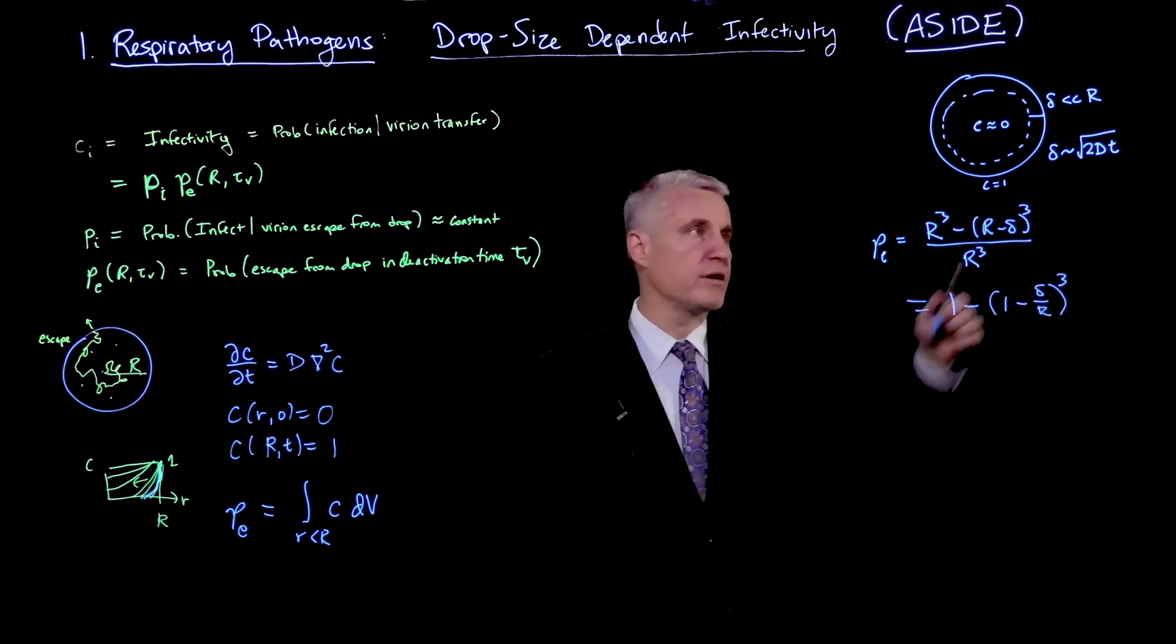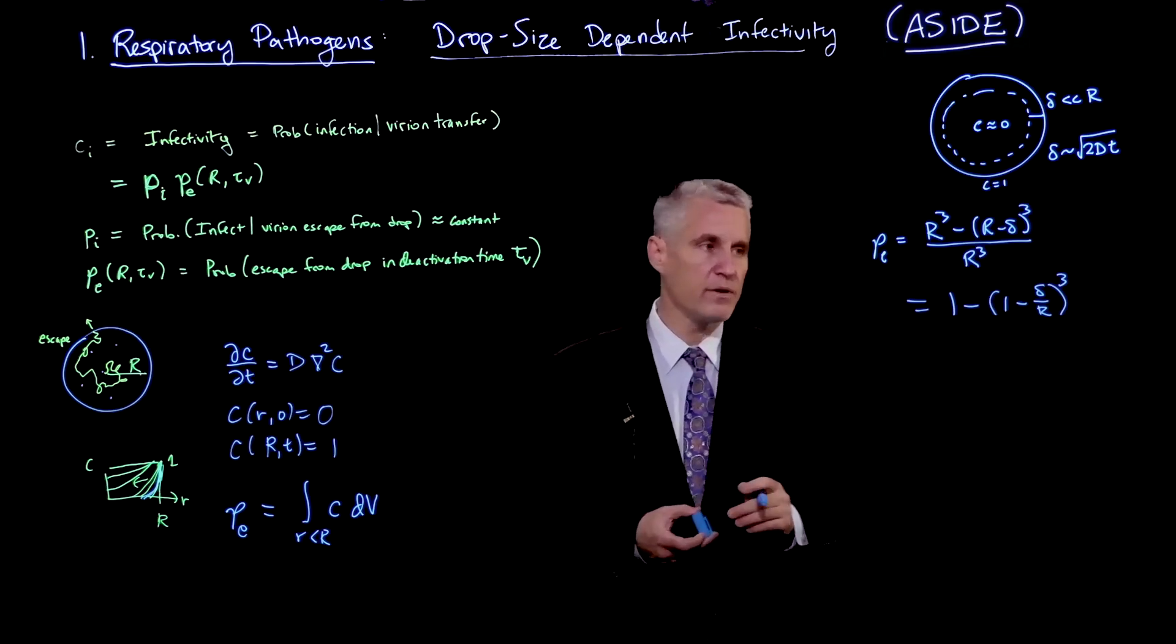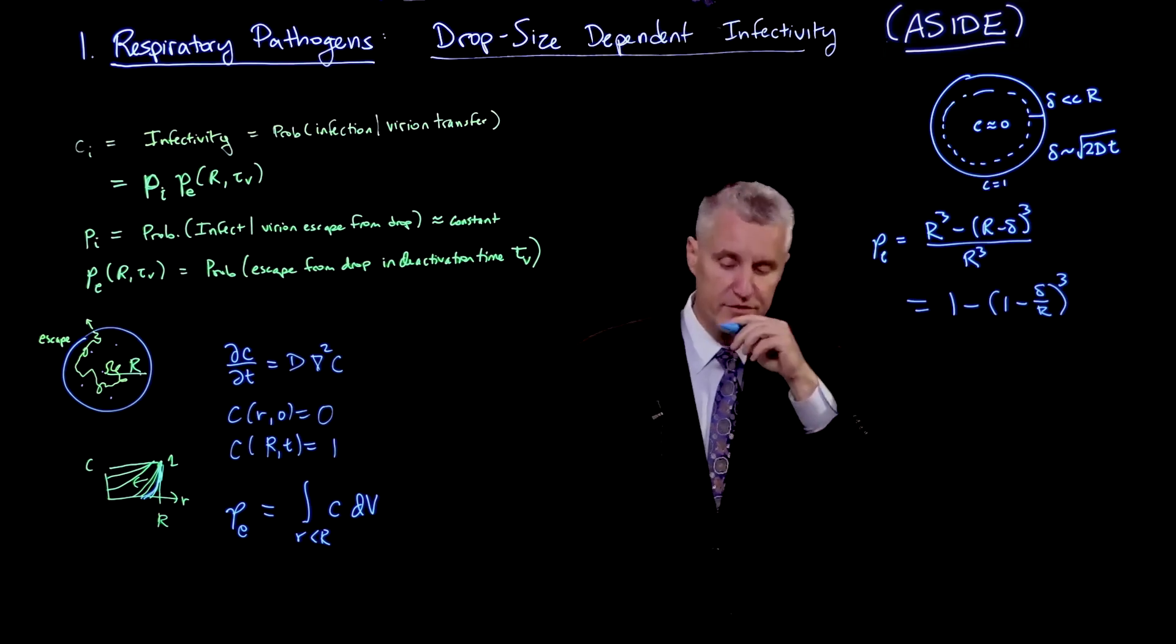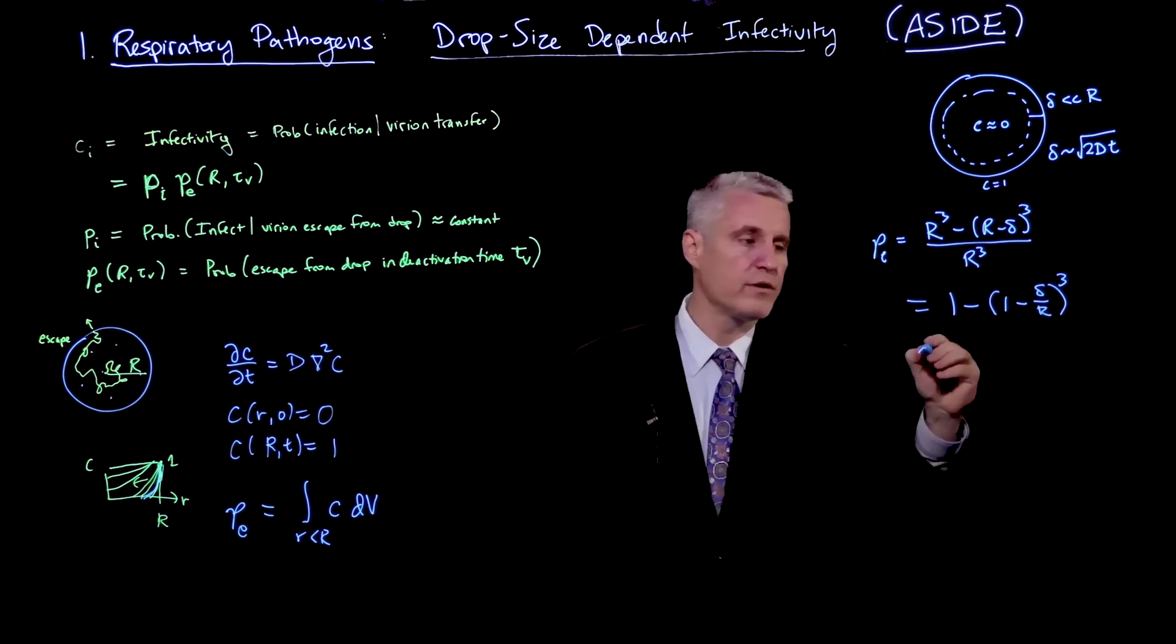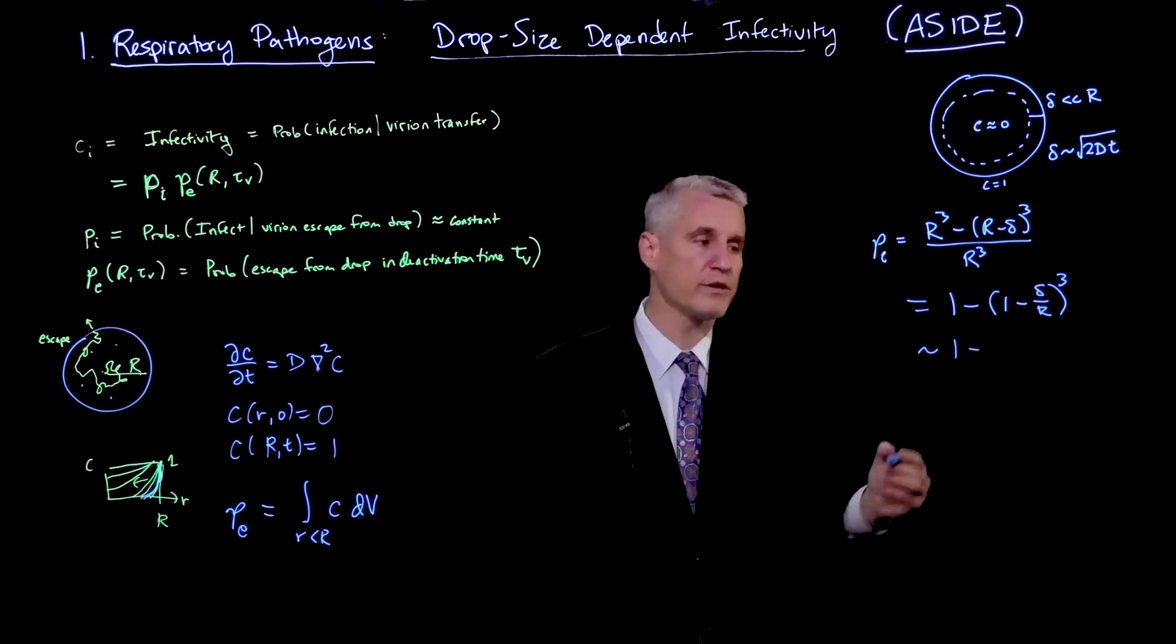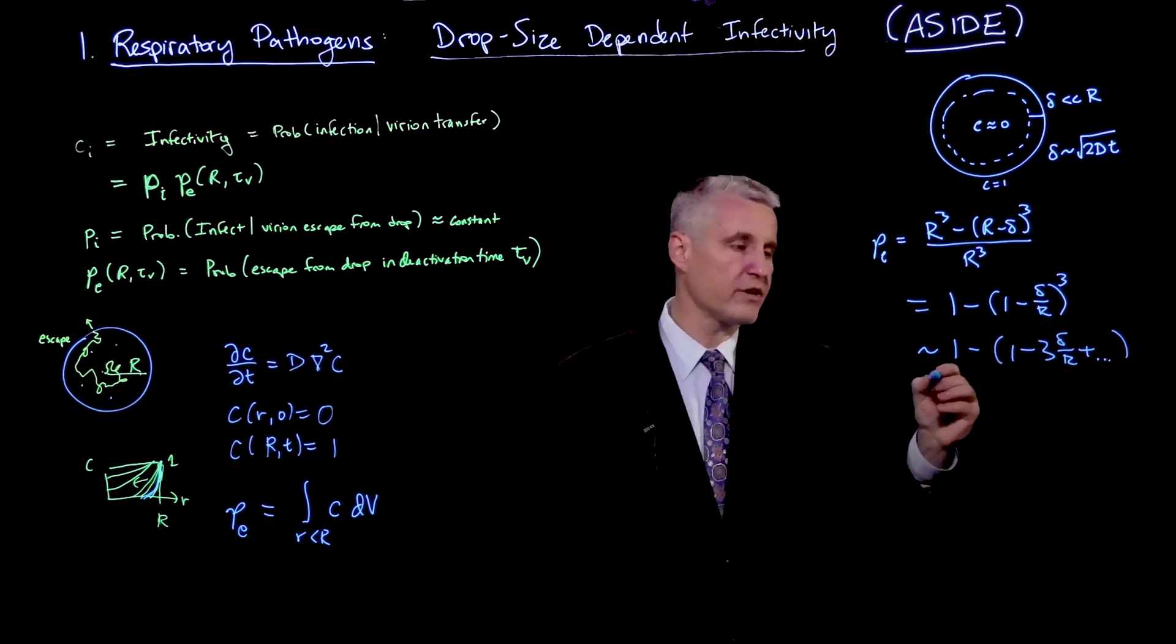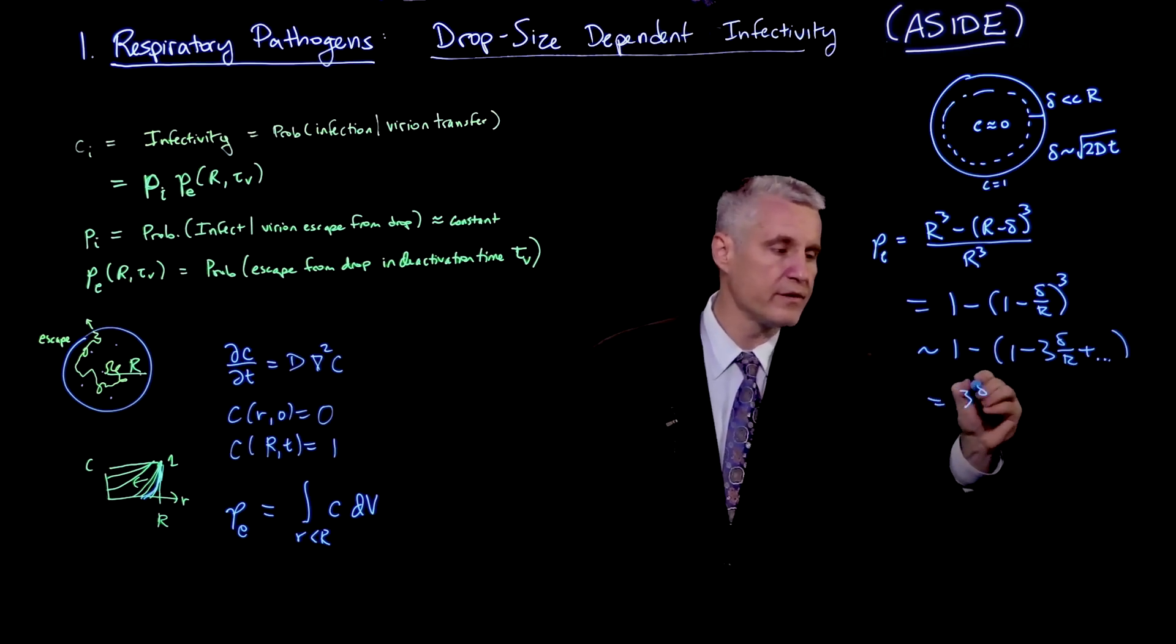So this is 1 - (1 - δ/R)³. This approximation here was valid for δ being much less than R. When that's the case, then I can say that this quantity is small, so at early times that's small. And I can expand. This is 1 minus, and then (1 - something)³ where that something is small is 1 - 3 times that something. When I work this out, the 1's cancel and I get 3δ/R.